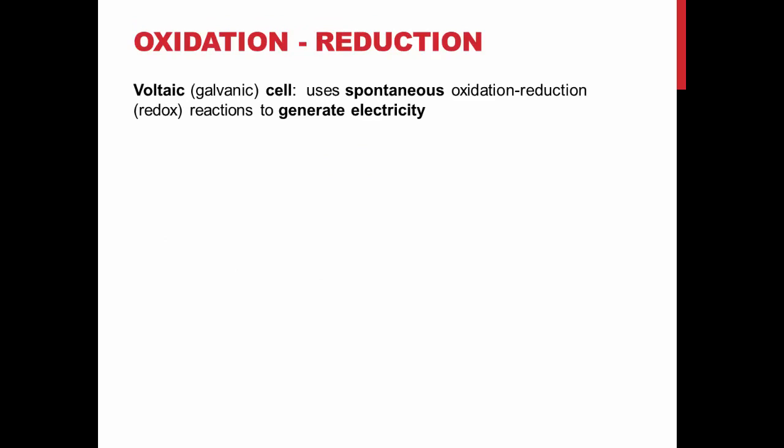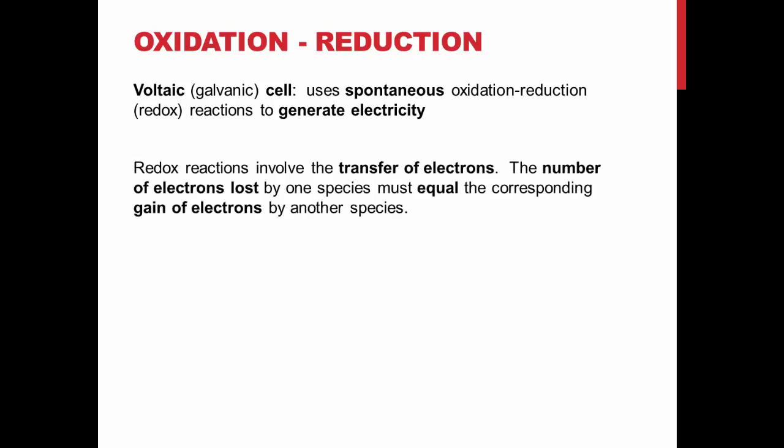What you prepare in this lab is a galvanic cell, or voltaic cell. These cells use spontaneous oxidation-reduction reactions to generate electricity. In chemical reactions, oxidation-reduction reactions have to be balanced. This means that there must be an equal number of electrons released by one species and gained by another. The voltage caused by the reaction tells us about the power of the driving force of the reaction.